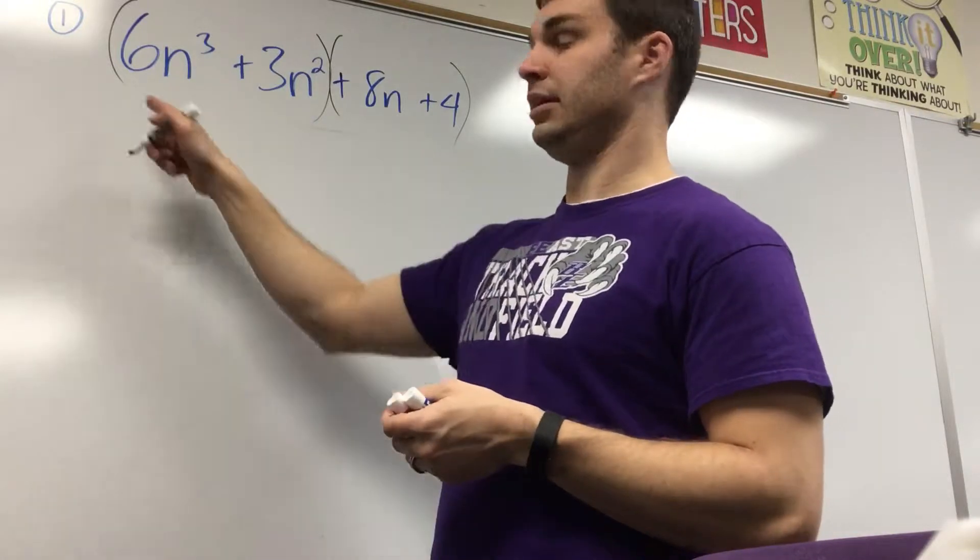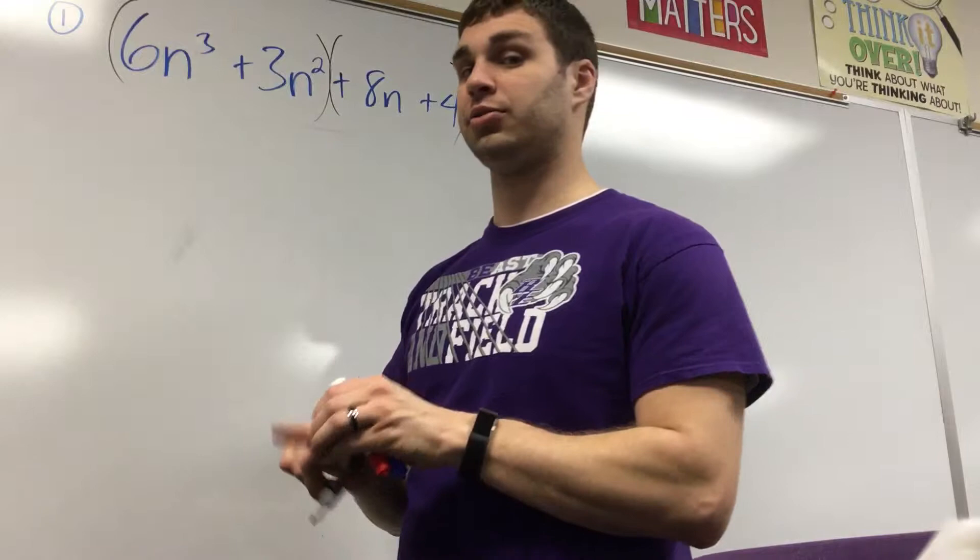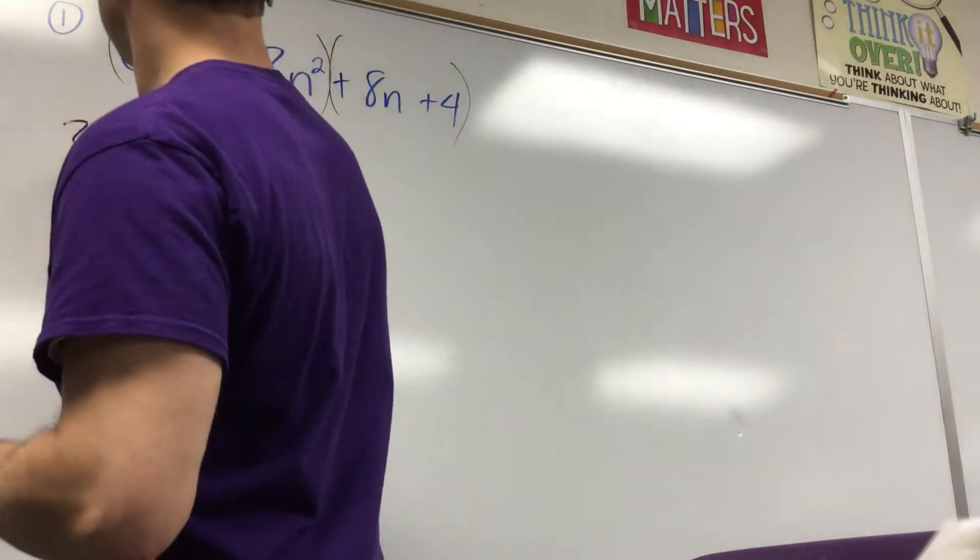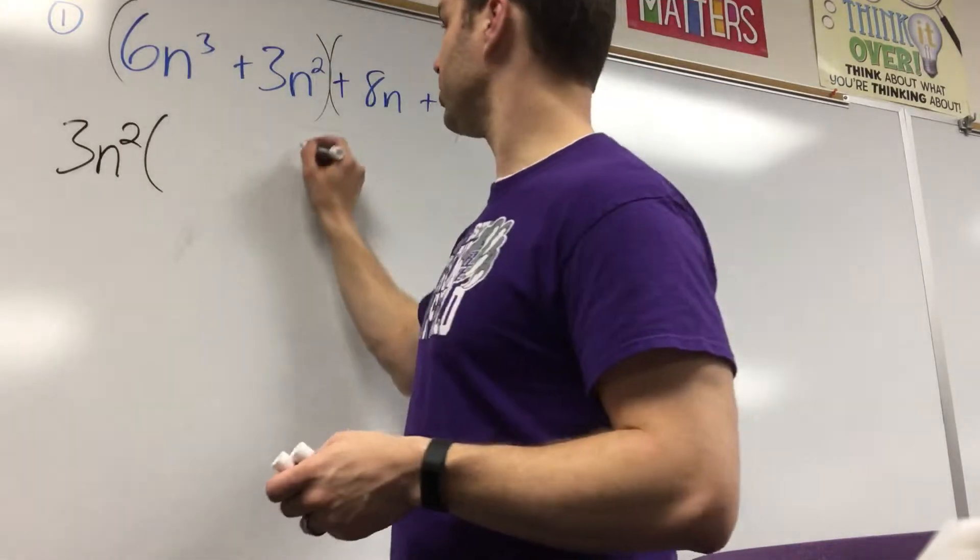So I'm seeing that these both have a 3n squared in common. 3 goes into 6 and 3, n squared goes into both n to the third and n squared. So I take out 3n squared, you have to write what's left over.